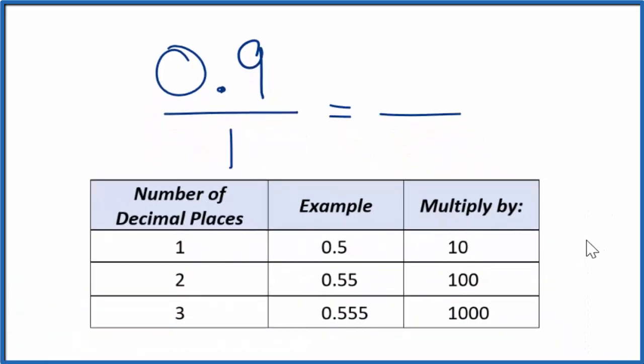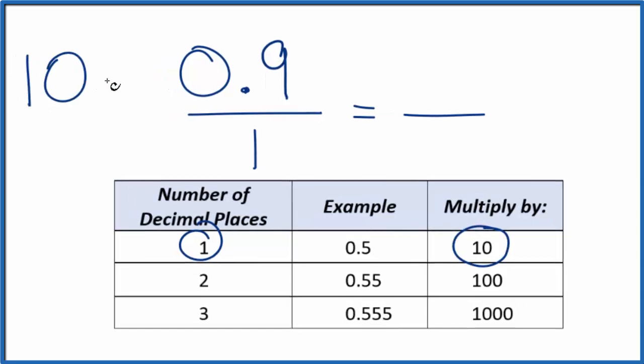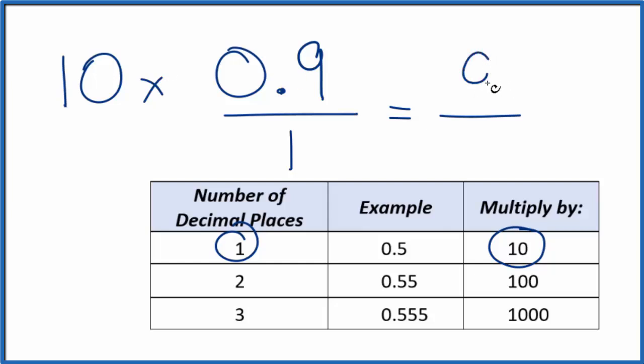Next, we only have one decimal place right here. When we have one decimal place, we can multiply this by 10. So 10 times 0.9, that gives us 9.